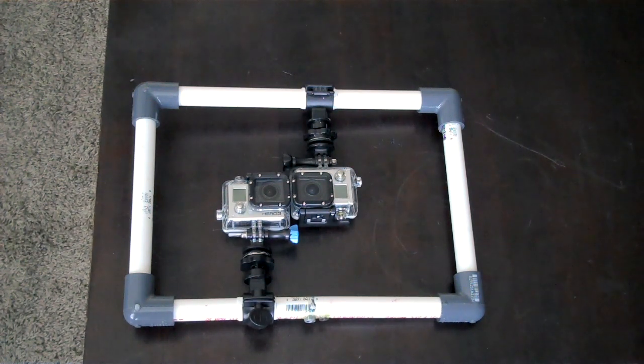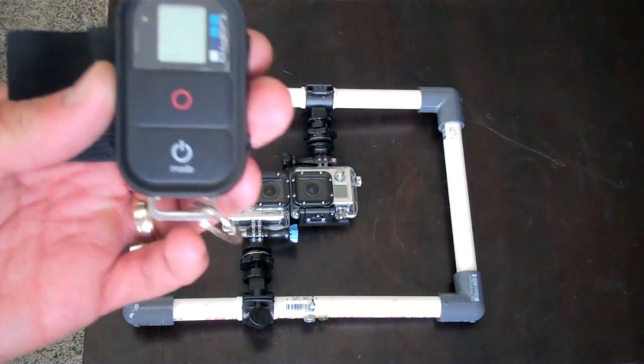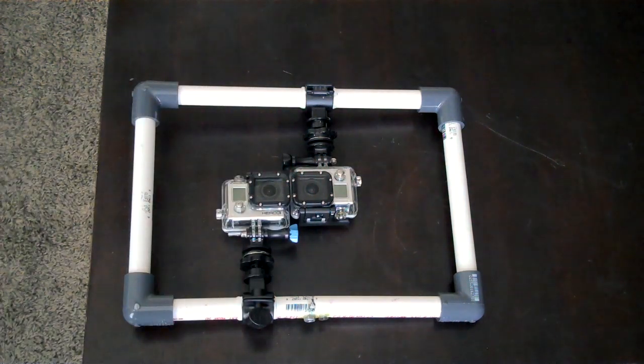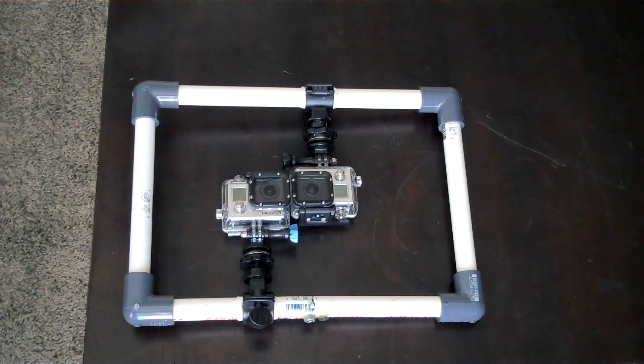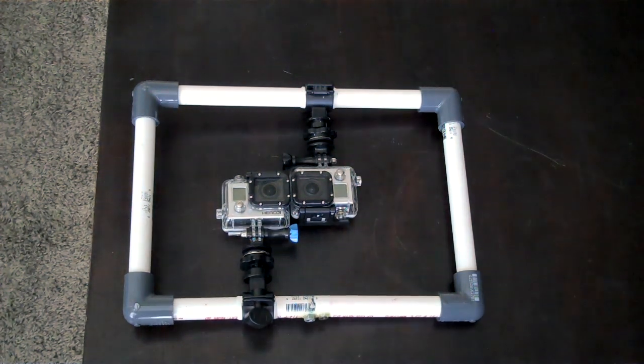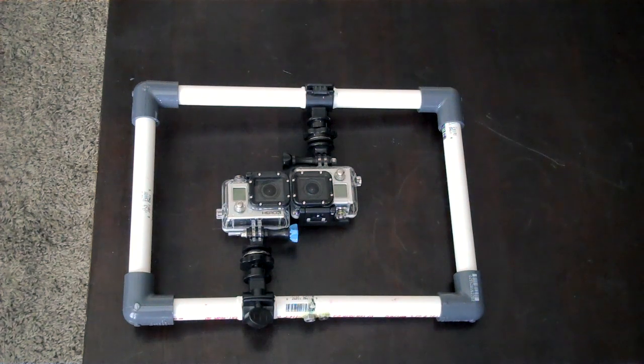You also have to have the GoPro WiFi remote. The remote comes stock with the Hero 3 Black Edition camera or you can buy one for $80 off the GoPro website. This remote will act the same as the sync cable does for the Hero 2 system. It will ensure that both cameras record at the same time and capture the same footage.